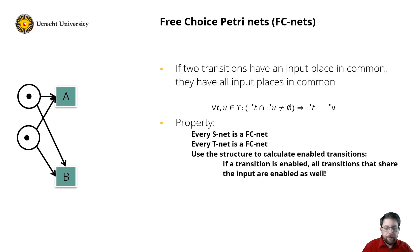So note that every S-Net is a free choice net, and every marked graph is also a free choice net. Furthermore, you can use the structure of this net to decide which transitions are enabled. This class of net had beautiful mathematical properties, for which I refer to the 1995 book of Jörg Desel and Javier Esparza.